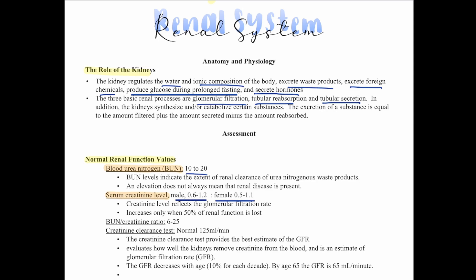Creatinine levels reflect the glomerular filtration rate and increase only when 50% of renal function is lost. The BUN-to-creatinine ratio is anywhere between 6 and 25. The creatinine clearance test normal is 125 milliliters per minute and provides the best estimate of glomerular filtration rate. The GFR decreases with age about 10% per decade, and by age 65 the average is 65 milliliters per minute.